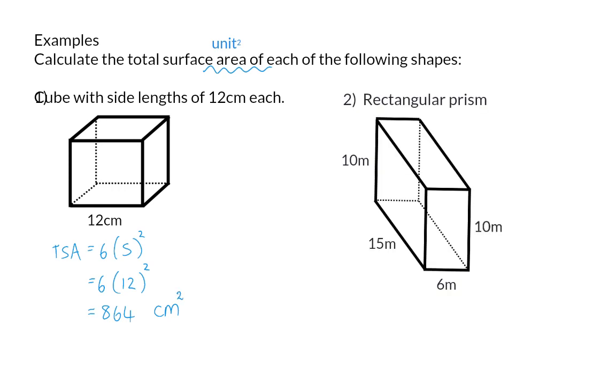Example 2 is a rectangular prism, and to calculate this total surface area, we need to calculate the area of all the different rectangles. Firstly, on the left-hand side, as well as on the right-hand side, we have a rectangle of 10 by 15. So the area of one such rectangle will be 10 times 15, which we will now double because we have two of them.